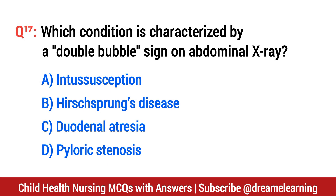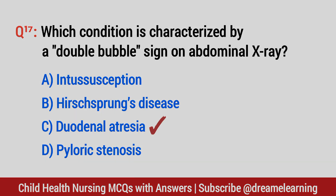Question number 17. Which condition is characterized by a double bubble sign on abdominal X-ray? The right option is C: duodenal atresia.